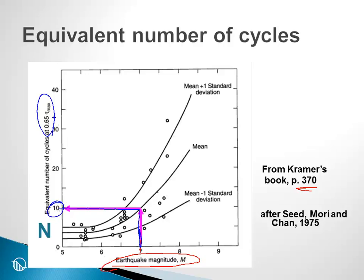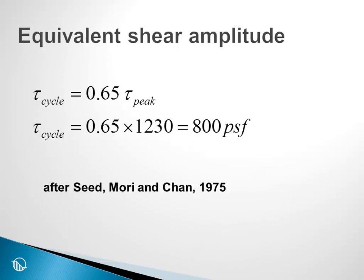What this graph is saying, that an earthquake of magnitude 7, for the mean data would produce approximately 10 cycles, where the shear stress amplitude is 0.65 times the peak value. If we had a peak value of 1230, multiplying it times 0.65 gives us a shear stress amplitude of 800 pounds per square foot.